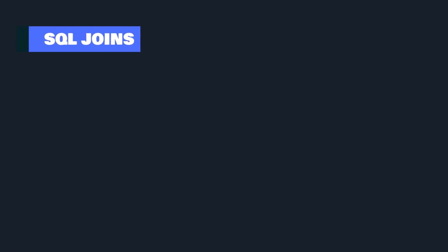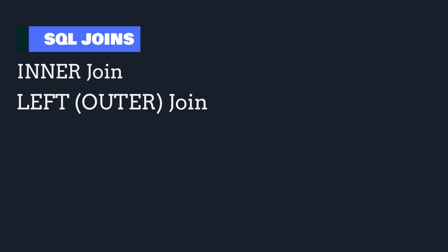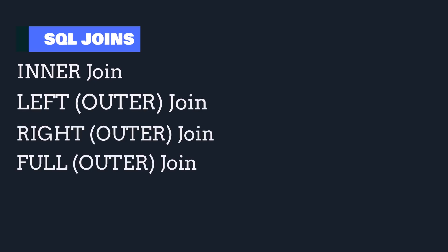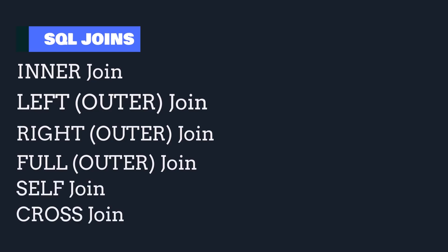In SQL, there are several types of join commands. In this chapter, we will take a look at the following: inner join, outer join — which includes left join, right join, and full join — and also self join and cross join.